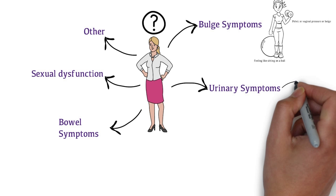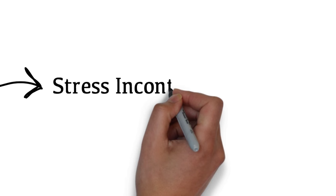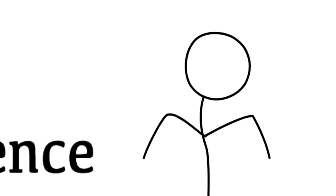A patient with urinary symptoms may present with stress incontinence, which is involuntary leakage of urine with increasing intra-abdominal pressure. They may leak urine with sneezing, coughing, laughing or exercise.